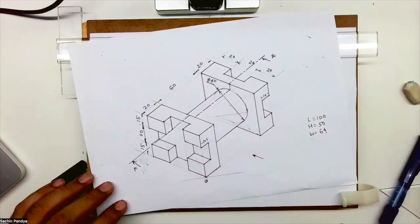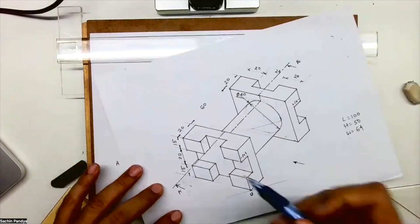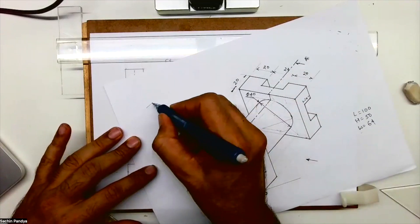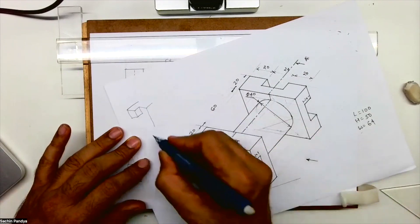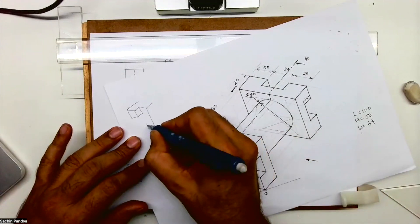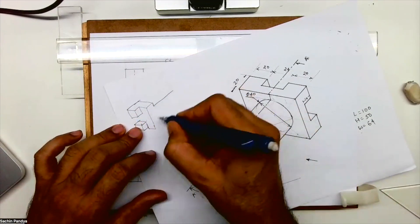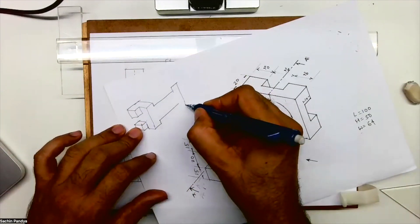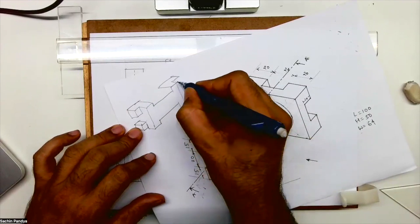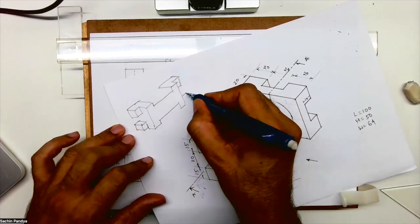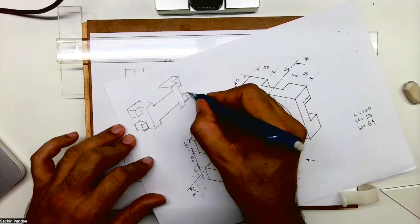This is section of front view along A-A. This is how the section plane will look like. Now we have to do sectional front along A, so what will happen? This portion will go away. When you do section, this front portion will go away. So this is how it will look.